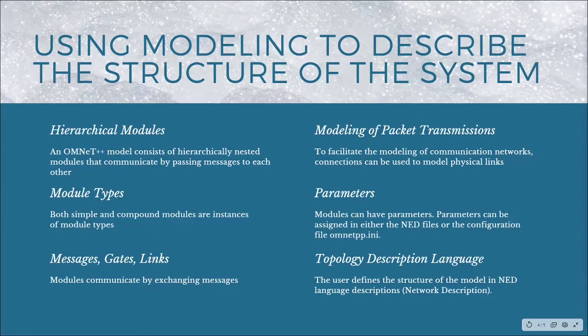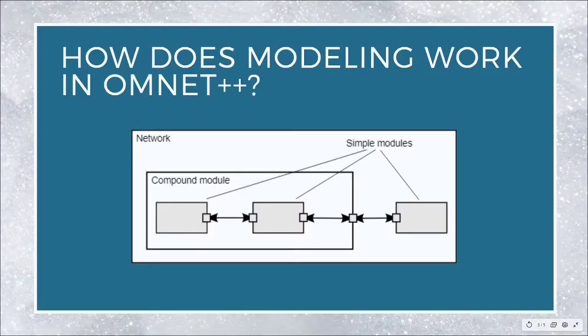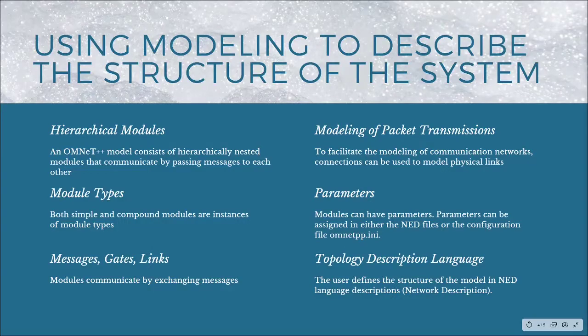Then we have module types. Both simple and compound modules are instances of module types. When describing the model, we define the module type, and instances of module types serve as components for complex module types. All modules of a network are instantiated as sub-modules and sub-sub-modules of the system module. Go back to the picture I showed earlier - these compound modules and these simple modules are all sub-modules of the network.